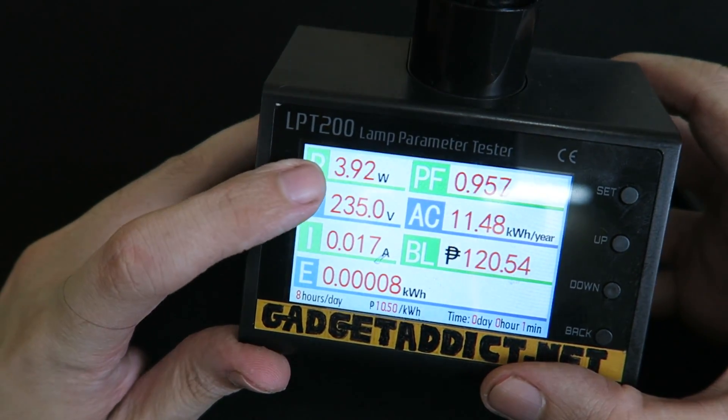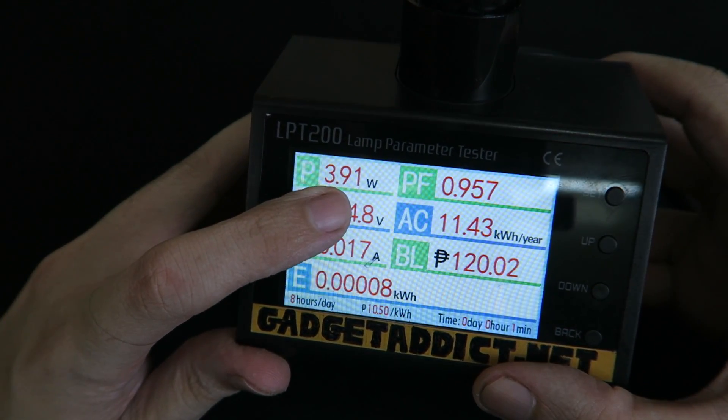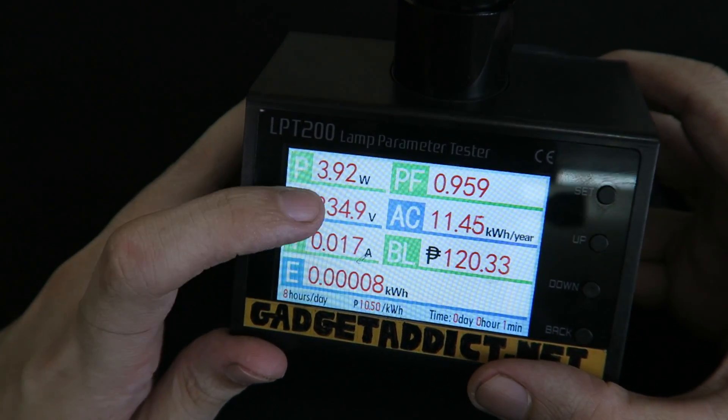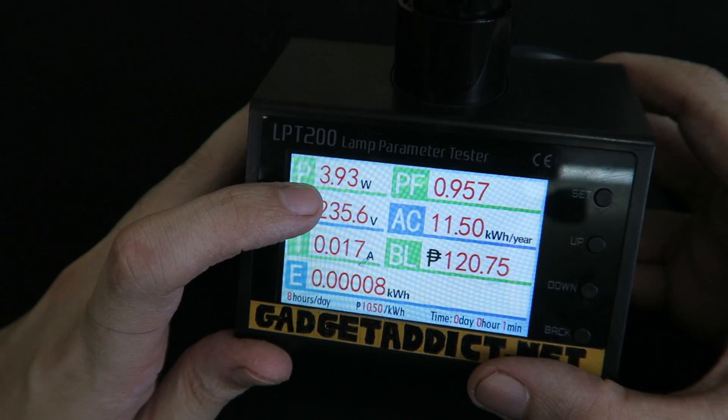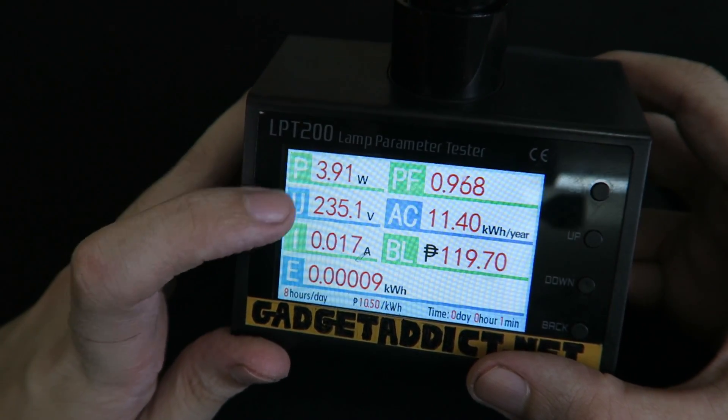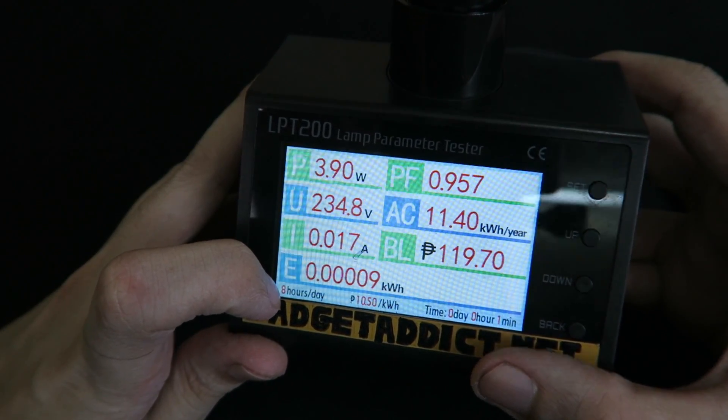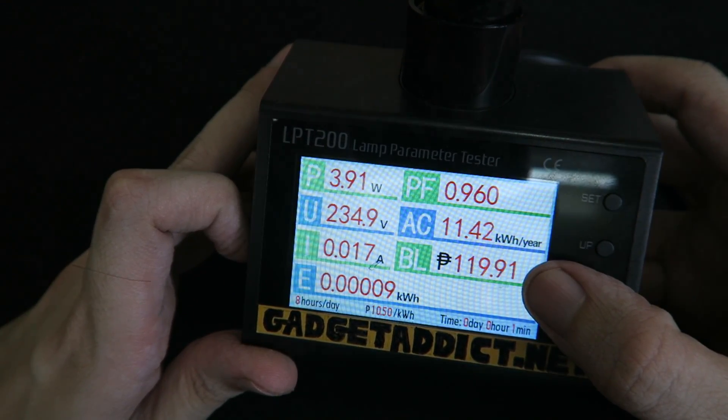Well that took a while but it seems pretty stable at around 3.9 watts. It goes up a little, goes down a little bit, somewhere around 3.9 watts. So if we were to run that for eight hours a day for a year it would cost around 120 pesos.